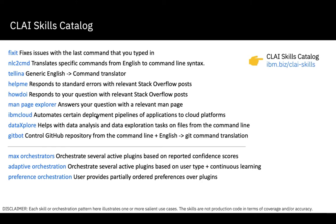In addition to the skills, Clay uses machine learning to orchestrate the different skills and their results. There are three modes of orchestration, which take into account the confidences returned by the various skills as well as the preferences of the end users of the terminal. This helps Clay personalize the output of the various skills to the liking of specific users and how they use their terminal.